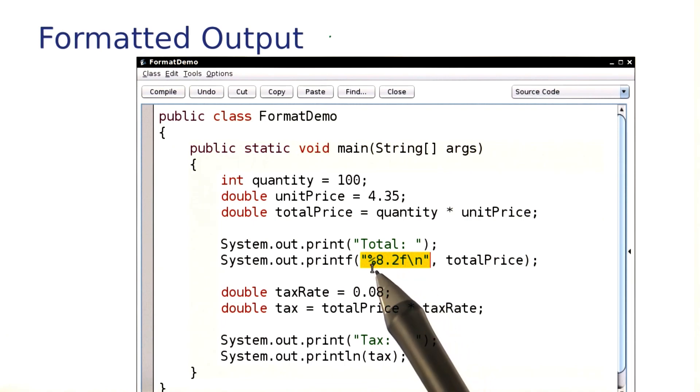The percent says we're now going to be printing something. The 8 means we want it to be 8 characters wide. The point 2 means we want 2 digits after the decimal point. The f means it's a floating point or decimal number. The backslash n means, and afterwards, please give us a new line.